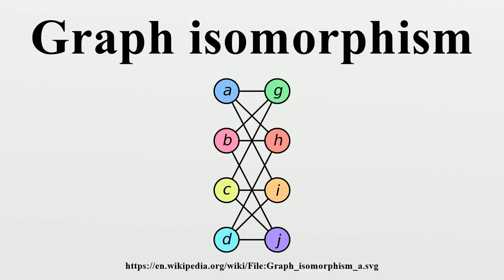Graph isomorphism is an equivalence relation on graphs and as such it partitions the class of all graphs into equivalence classes. A set of graphs isomorphic to each other is called an isomorphism class of graphs.